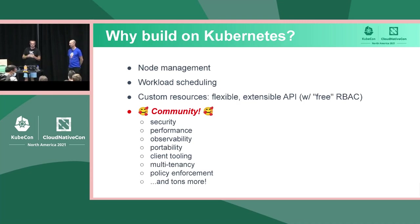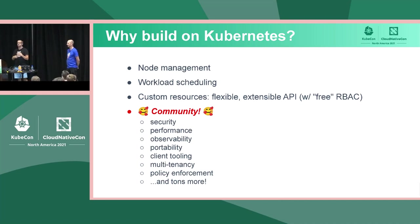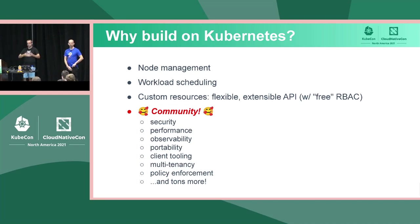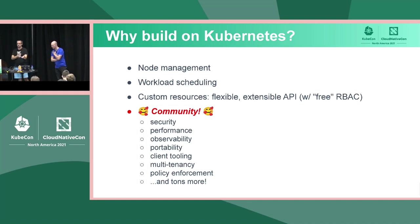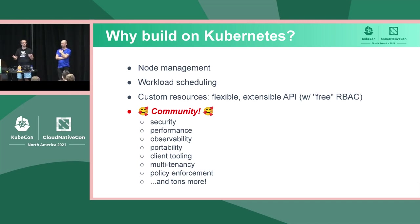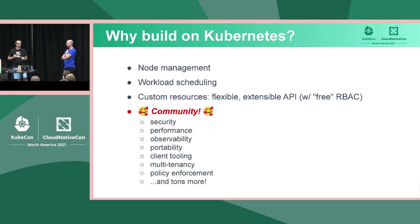Why did we decide to build on Kubernetes? When building a workflow service, there are a lot of problems. Two of the biggest are node management — managing the resources that will be doing the work — and workload scheduling: when a user's request comes in, putting that onto one of those nodes. Kubernetes is very good at these, so by building on Kubernetes we get to offload those concerns and make them Kubernetes' problem.